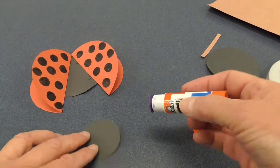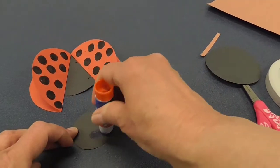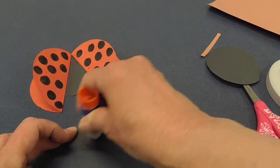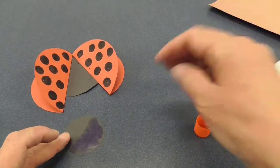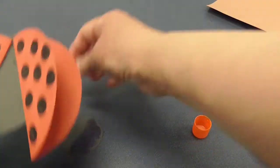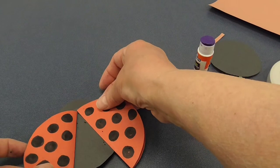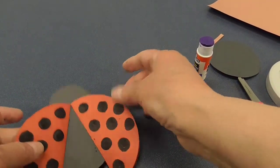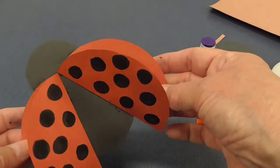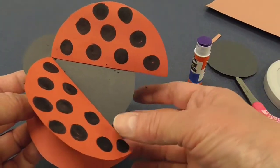Now the next thing is the head. So I'm going to put glue on the bottom half of that like that and stick that right like that. Okay so now my ladybug has a head, a body, and two wings.